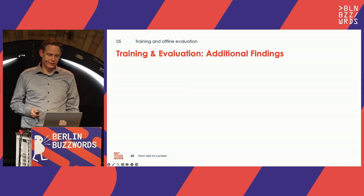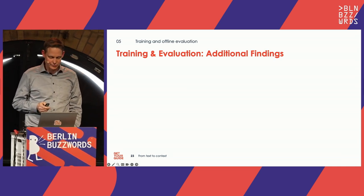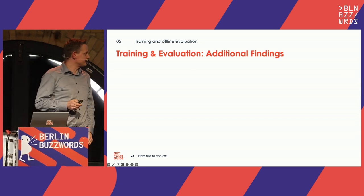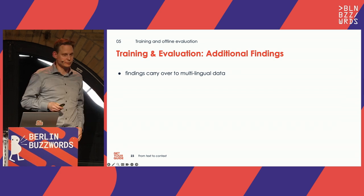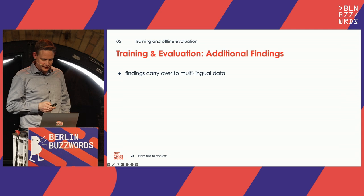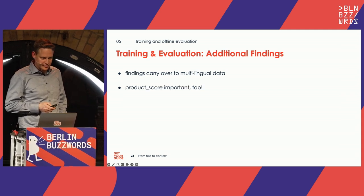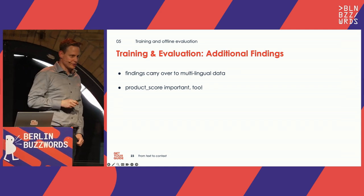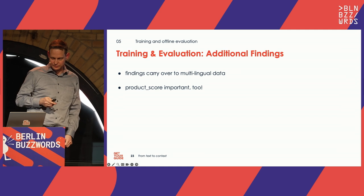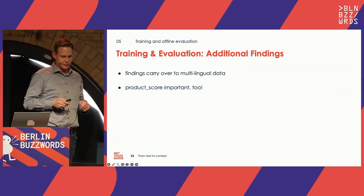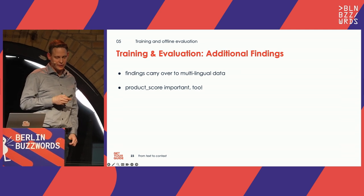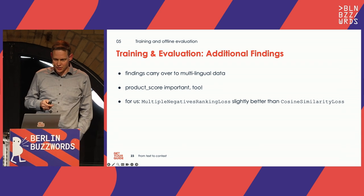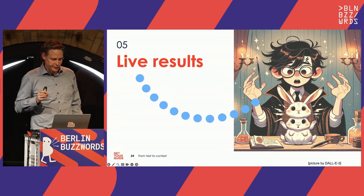Some additional findings from offline evaluation: the scores were based on English language, but the findings carry over to multilingual — we evaluated that too. Including the product score was also quite important for achieving good NDCG. Finally, on training losses: we tried different options, and the multiple negatives ranking loss performed slightly better than cosine similarity loss for our use case.